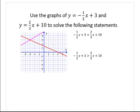Here we have the graphs of y equals negative one-half x plus 3 and y equals two-thirds x plus 10. We're asked to use these graphs to solve the following statements: where is negative one-half x plus 3 equal to two-thirds x plus 10, and where is negative one-half x plus 3 greater than two-thirds x plus 10?